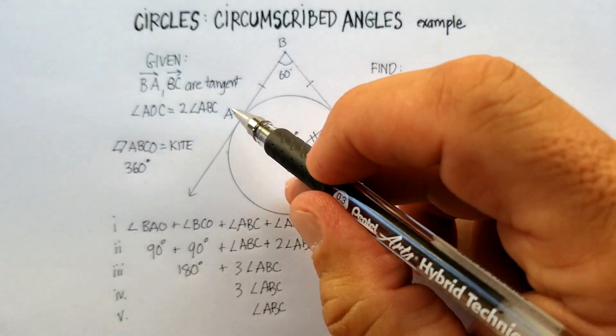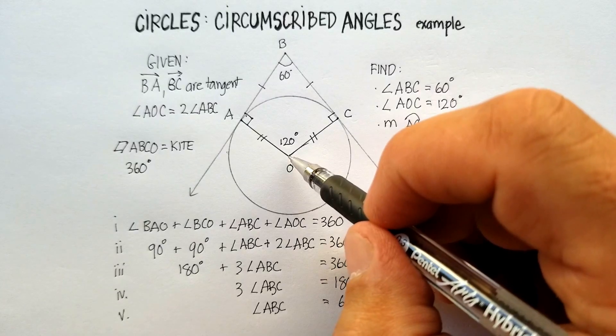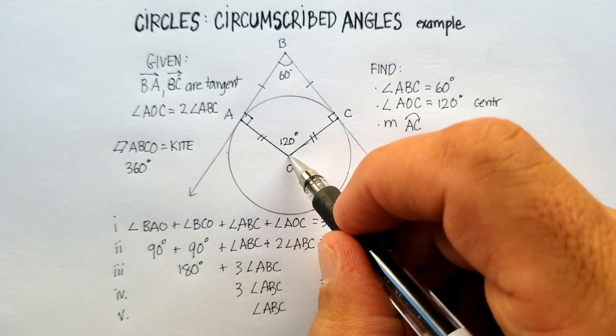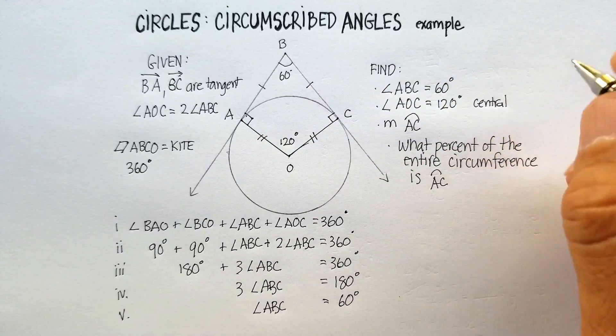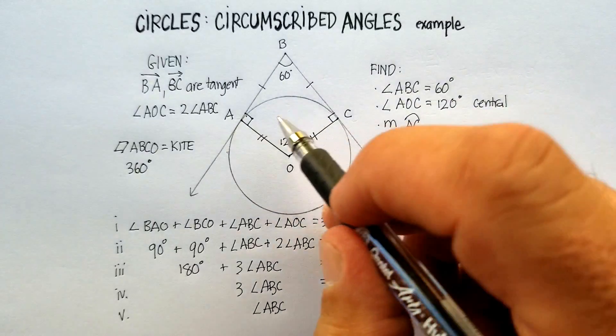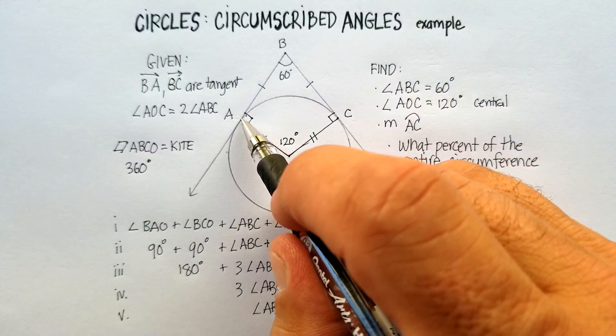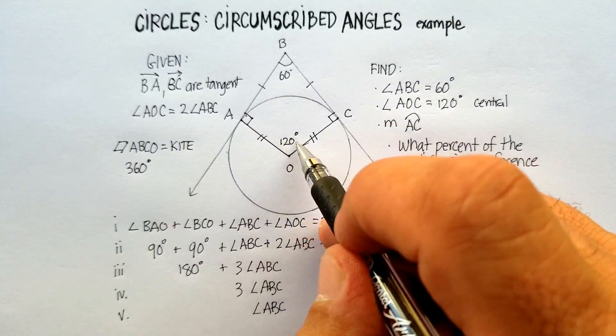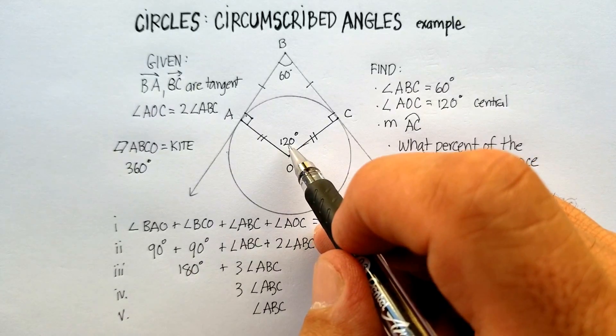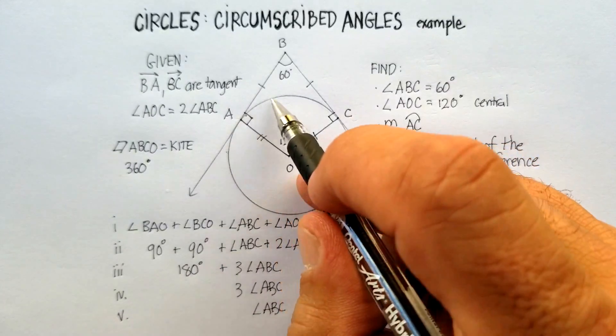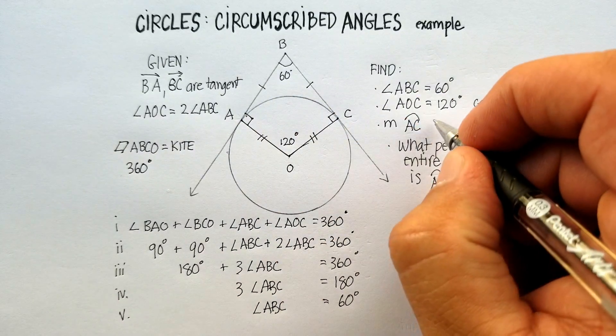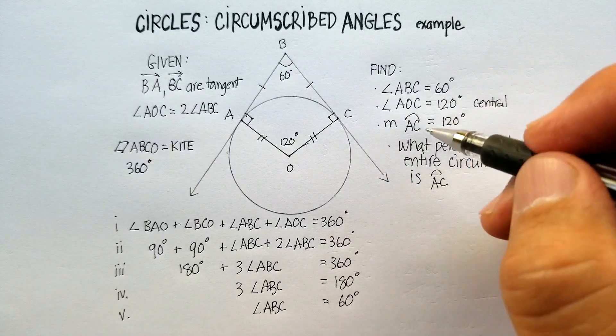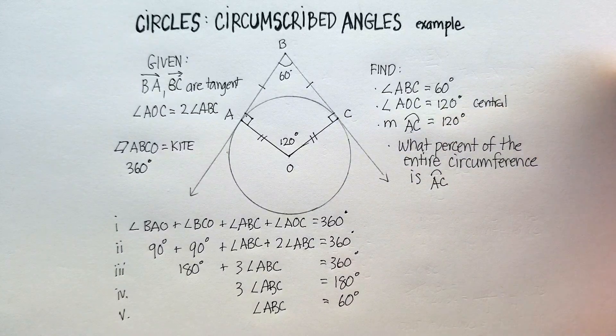Well, we know that angle AOC is a central angle, right? Because the vertex is starting in the center of the circle. And the center of the circle, as it goes out, makes arc AC equal to, remember that's called a central angle. That means that this angle is the same as the number of degrees in that arc. That's important. So, it's 120 degrees for the measure of arc AC. So, we've got that.